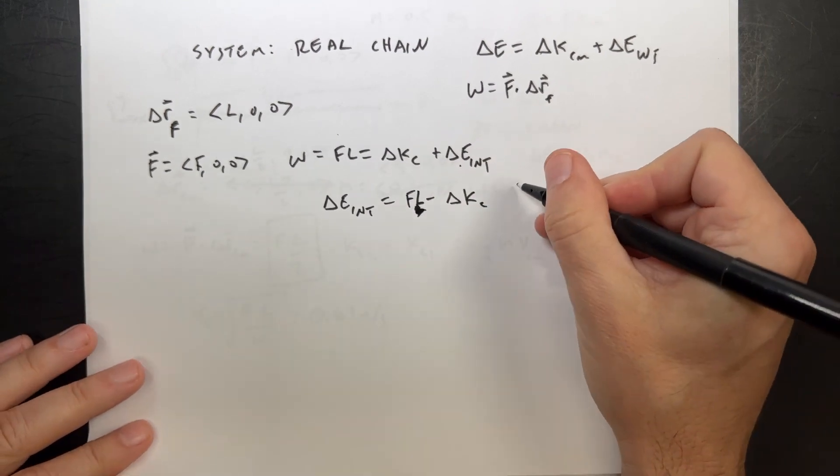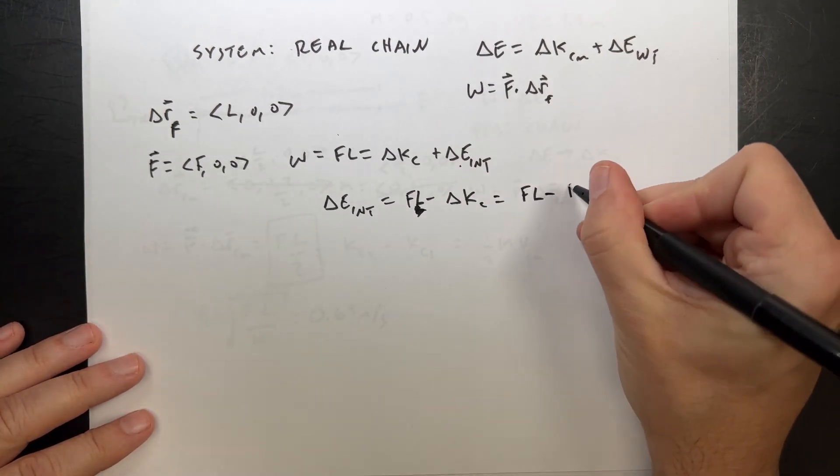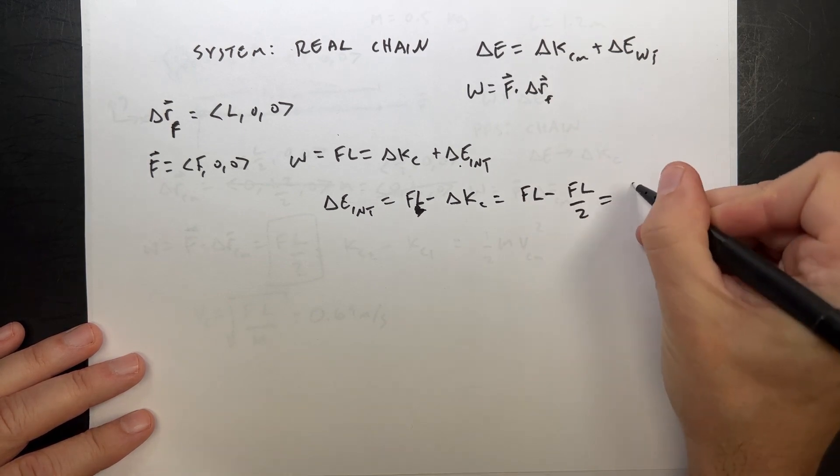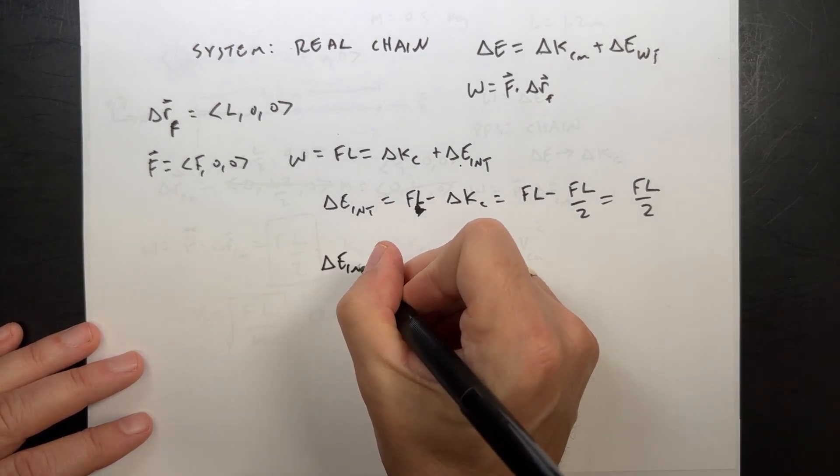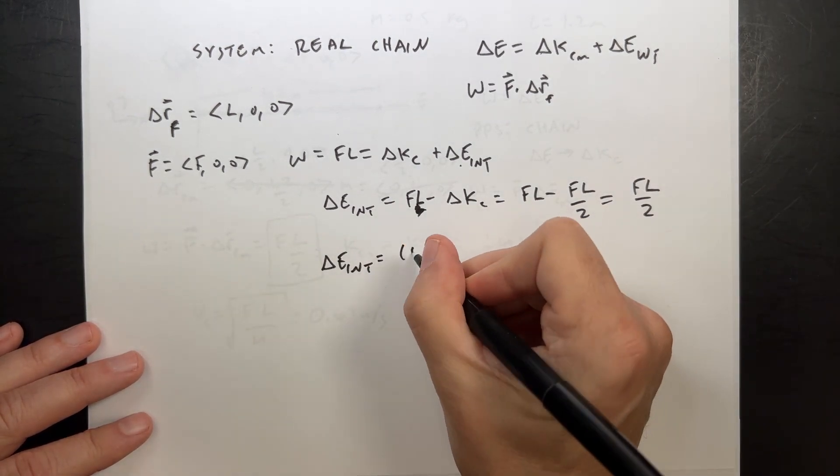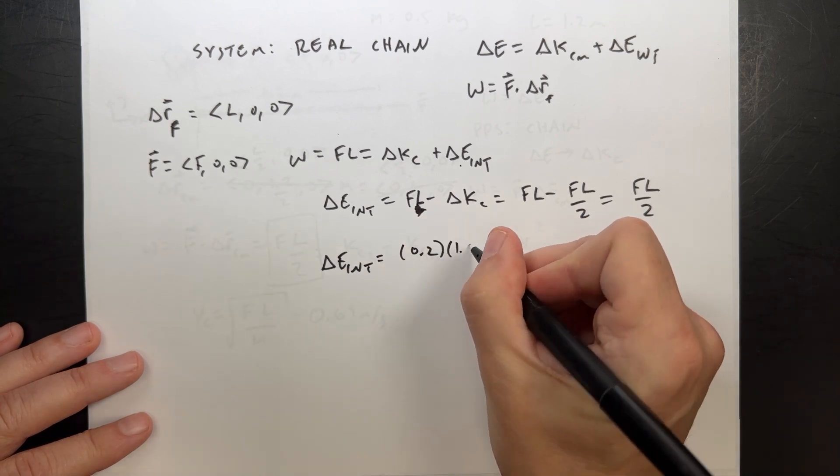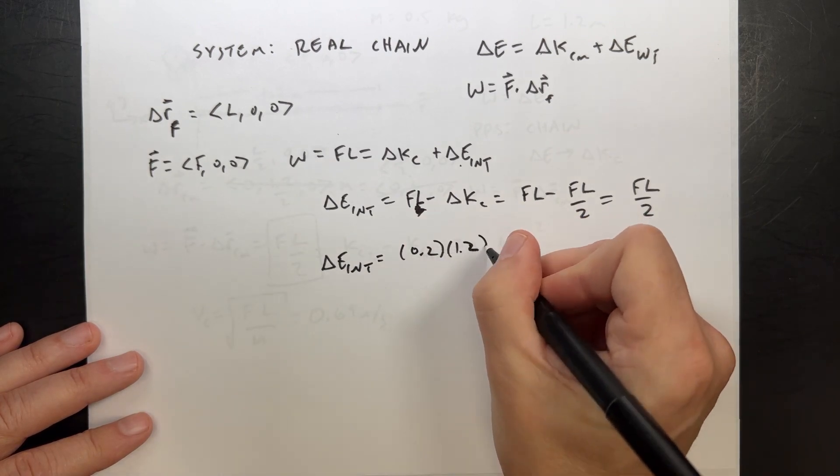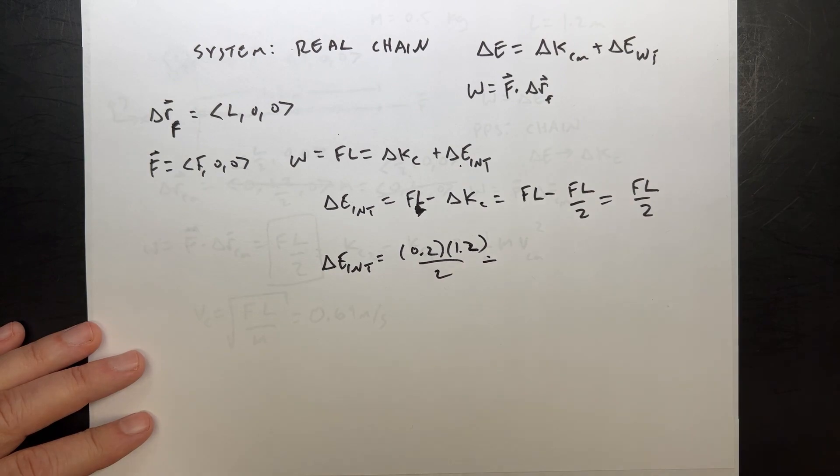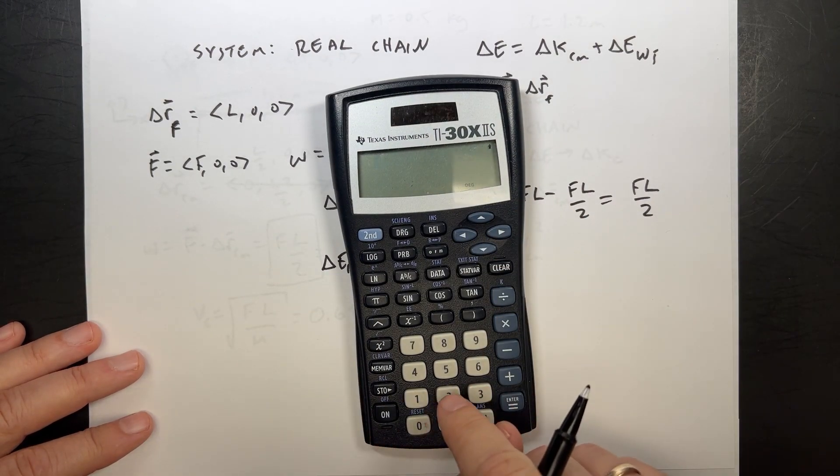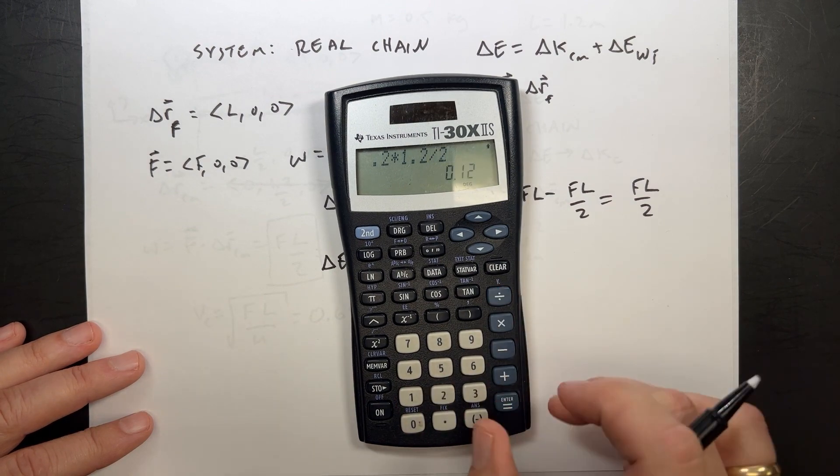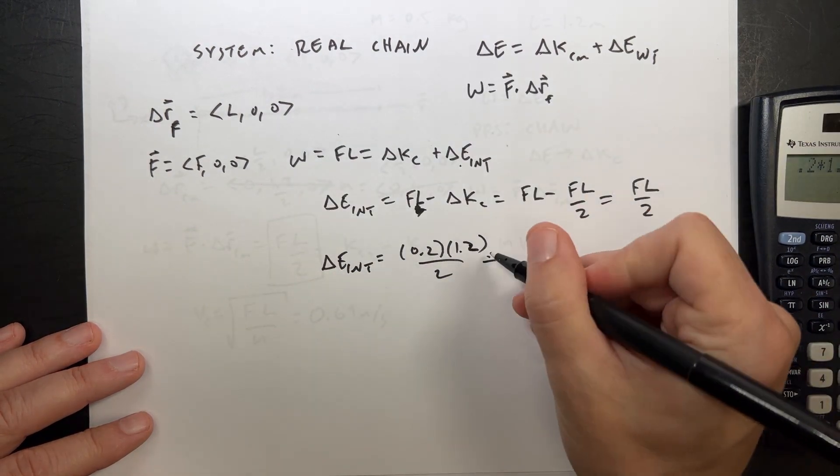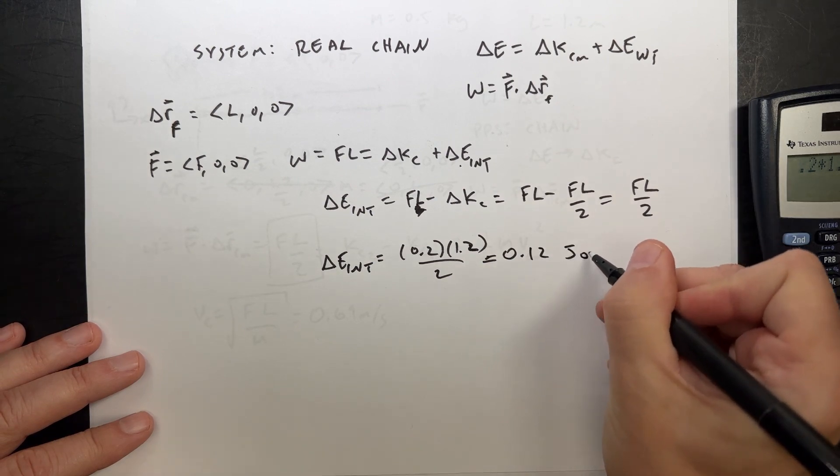That's not that. I'm not having a good day. So that's it. That's the change in internal energy. We can calculate that. We can put in our numbers. So 0.2 Newtons, 1.2 meters, divided by two. And I could probably do that in my head, but I'm not going to. So 0.2 times 1.2 divided by two equals 0.12 joules.